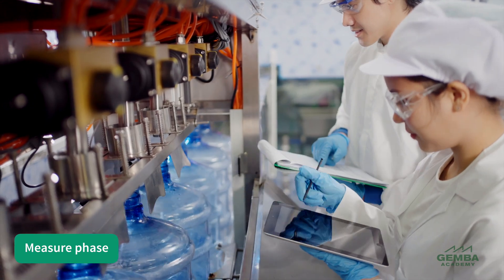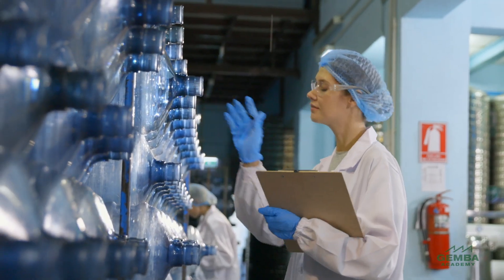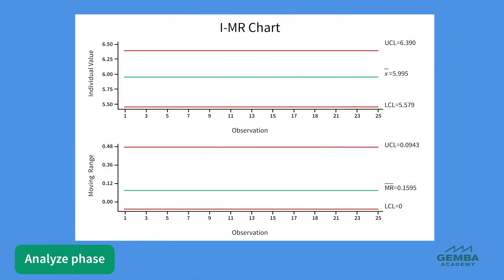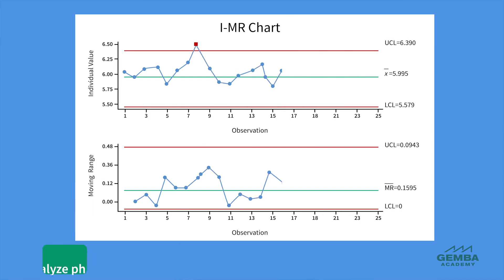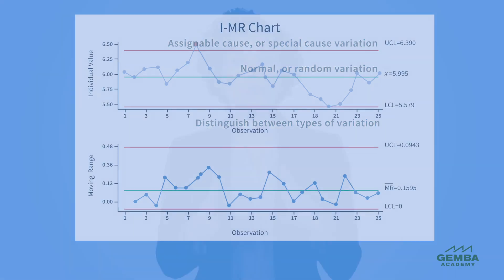In the measure phase, SPC helps collect data and establish metrics that will serve as a baseline for performance. During the analyze phase, SPC aids in identifying variations and deviations from the norm, helping to pinpoint potential areas for improvement. These analytical tools help teams distinguish between common cause and special cause variation, which is critical for determining whether a process requires fundamental changes or merely needs adjustments to be brought under control.